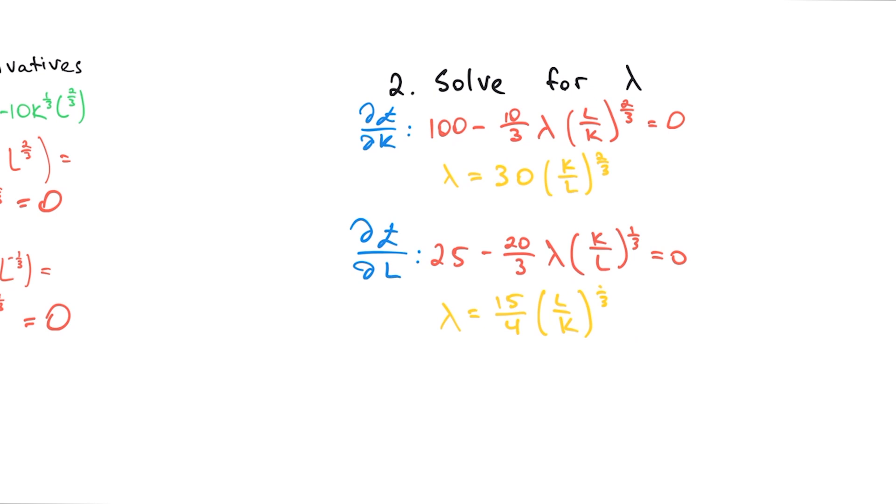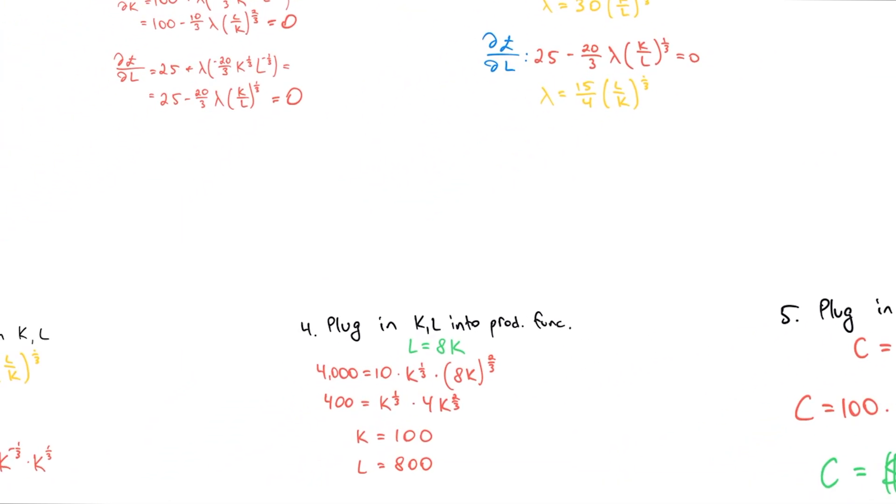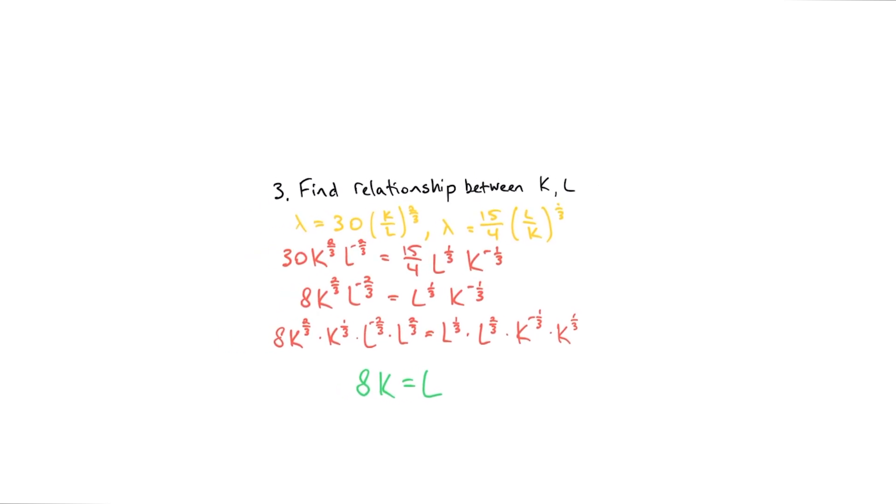Now for step number three. Since we know that this lambda is equal to this and the second lambda is equal to this, and of course lambda equals lambda, surely that must mean that this is equal to this.